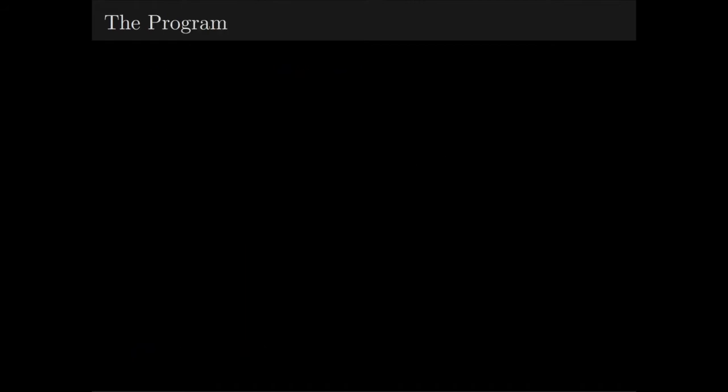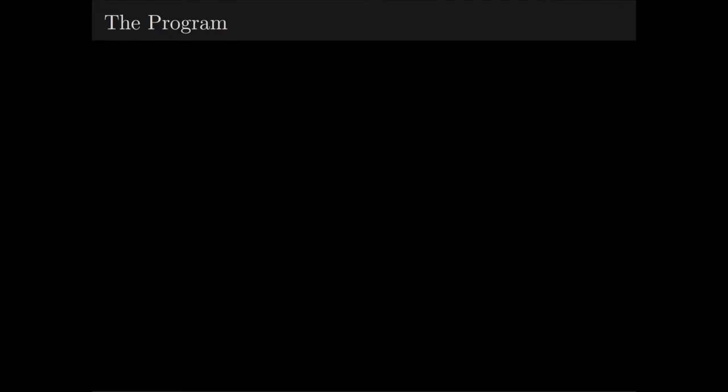Now, I'm going to describe the preclassical program I alluded to earlier. Now that we have a Postnikov decomposition for our space X, we can use the vertical maps to essentially induct on dimension. We're going to use the homotopy n-type of each level of our tower to deduce the n+1 type of the next.